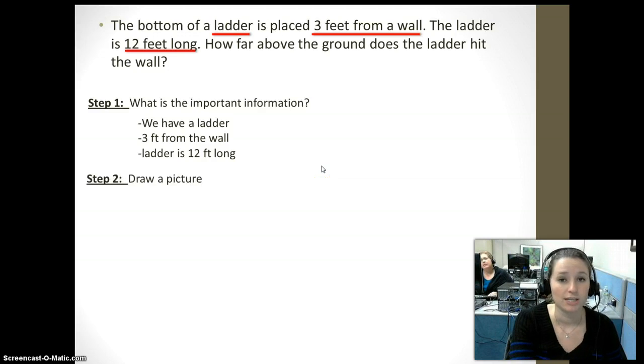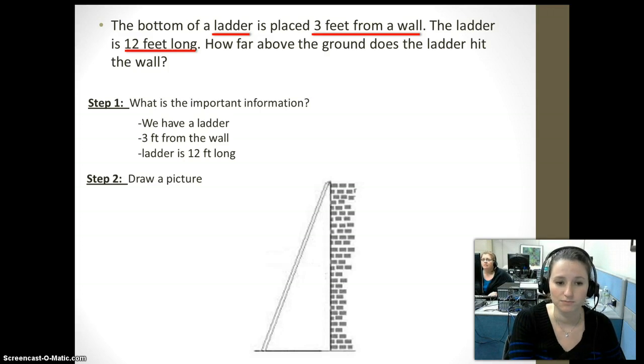So the next step we want to do is we want to actually draw the picture ourselves. So we have a ladder that is placed against a wall. So I'm just going to draw a ladder against a wall. So here is my picture. Now let's look at our information. The ladder is three feet from the wall. So down here I'm going to write three feet. Then we have a 12 foot ladder. This part right here is our ladder. So that's 12 feet.